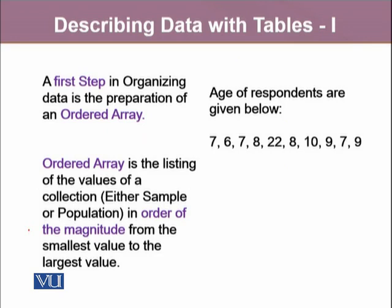Whenever we want to organize our data, the very first step we take is to order our data into an ordered array. An ordered array is the listing of the values of a collection — that collection could be either from a sample or a population — ordered in terms of magnitude from the smallest value first to the largest value.